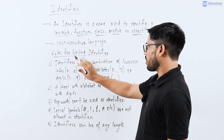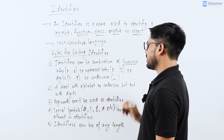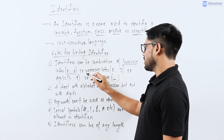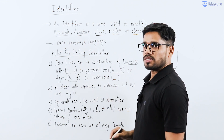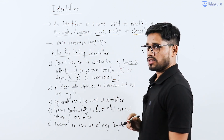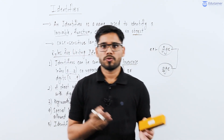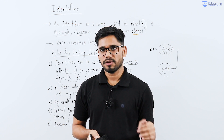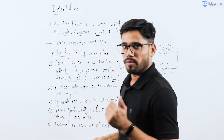Rules for writing identifiers: The first rule is that identifiers can be a combination of lowercase letters (small a to small z), uppercase letters (capital A to capital Z), digits (0 to 9), and one special symbol — underscore. So if you create a particular variable or class, you can use lowercase letters, uppercase letters, digits 0 to 9, and underscore. These three combinations you can use.